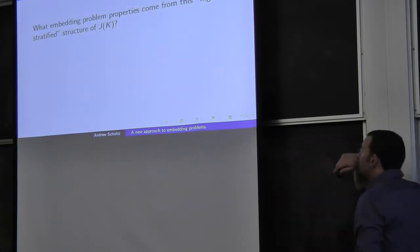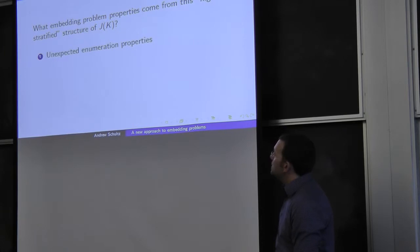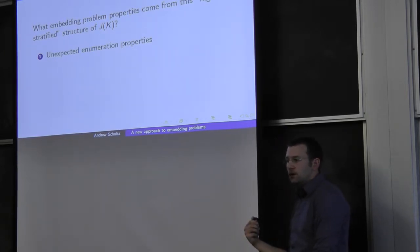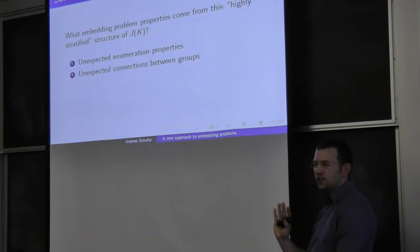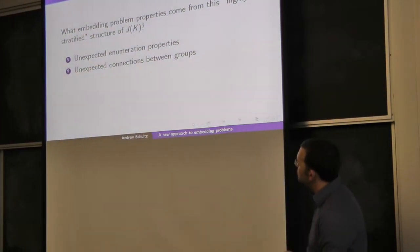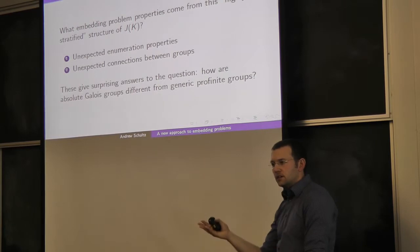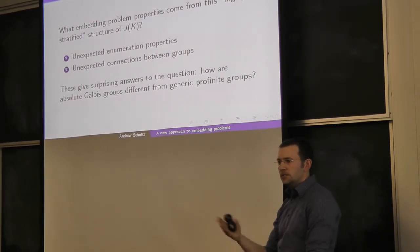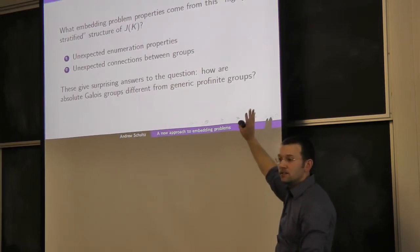I want to figure out what these special properties give us in terms of specific embedding problems. First, this highly stratified structure gives some unexpected enumeration results for embedding problems. Second, it gives unexpected connections between solutions to embedding problems. Both of these get at the question: how is an absolute Galois group different from a generic profinite group?